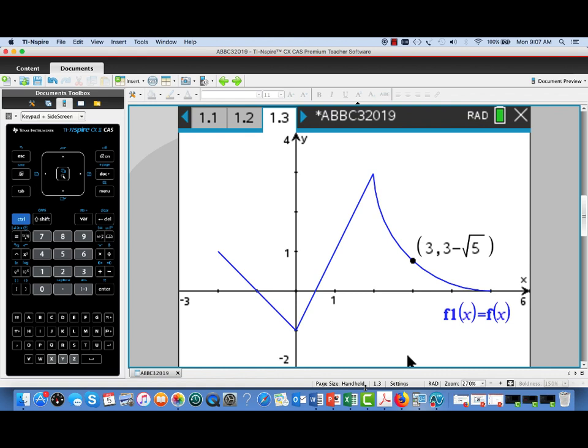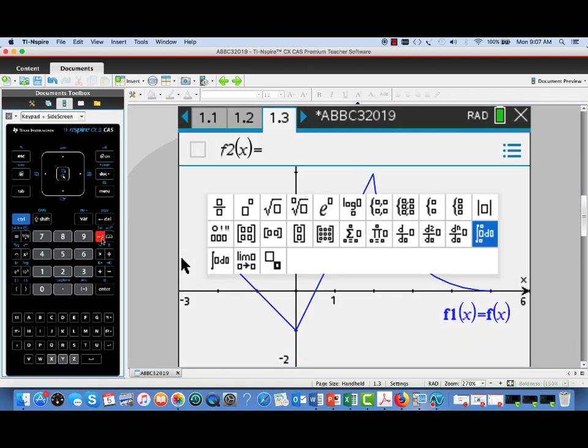Alright. Now what we'll be doing with this graph is actually looking at its derivative and one of its antiderivatives graphically. To get started on that, let's go to f2 of x and enter a derivative. I'm going to pull up a template. Let's see if we can find a derivative template here. There we go.